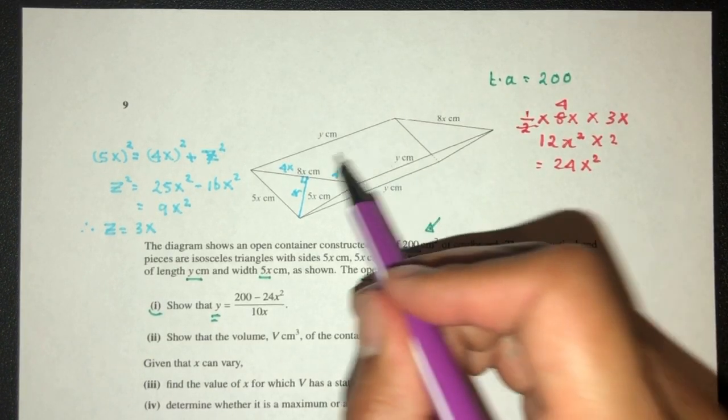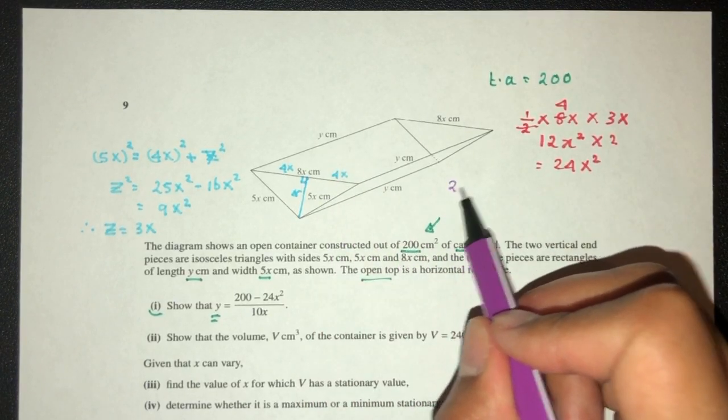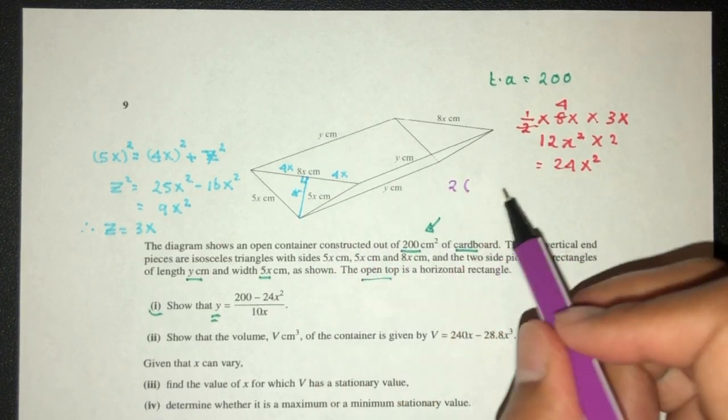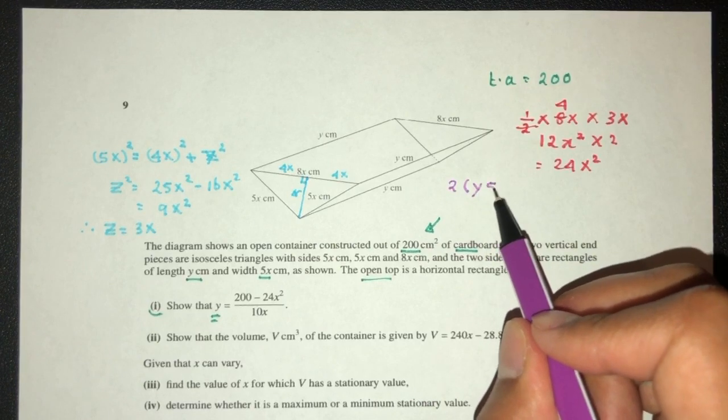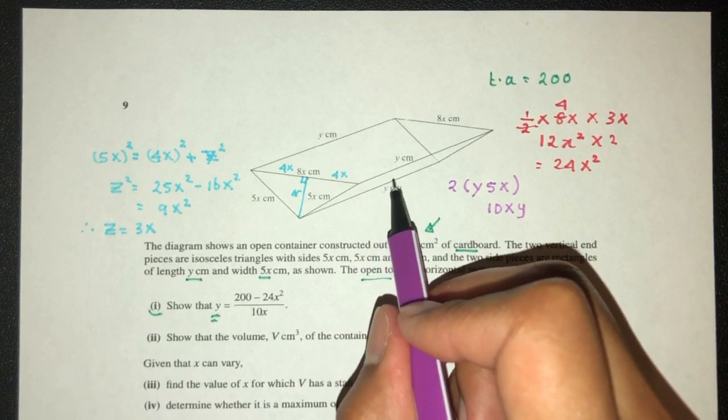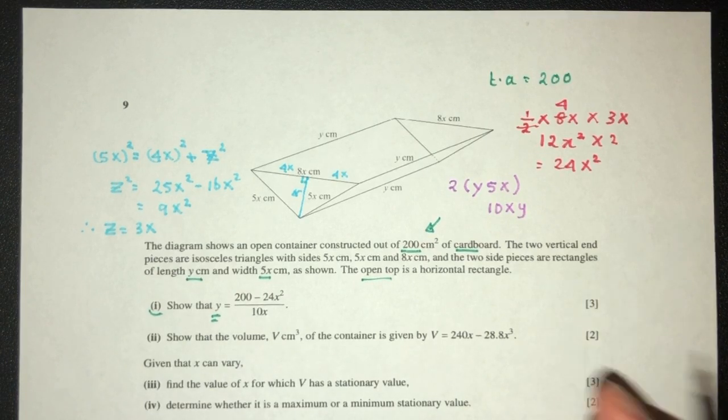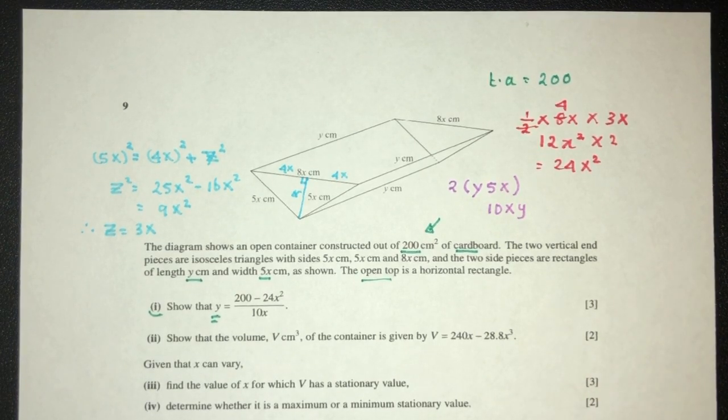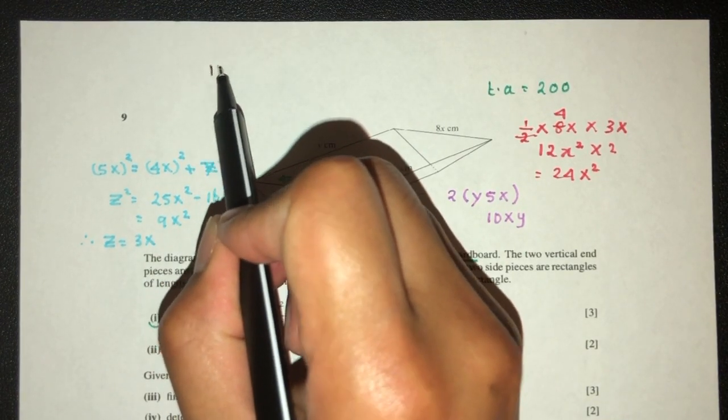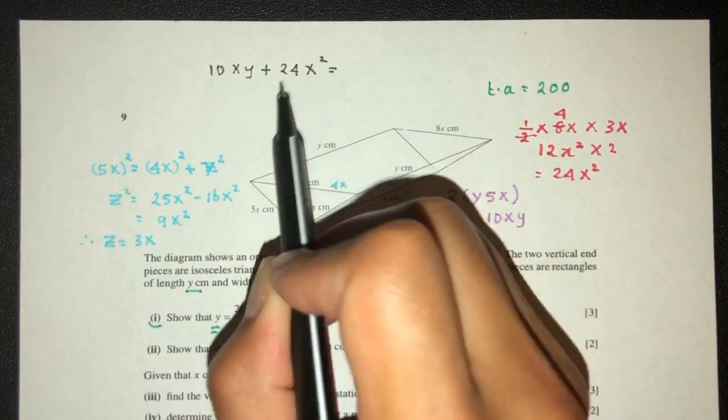Now, we have this side and the side in the back. So two rectangles. We have to find the area of the rectangle. It is length times the width, y times 5x. So here we have 10xy for the two sides of the rectangles. Now, we just have to add everything together to form our equation.